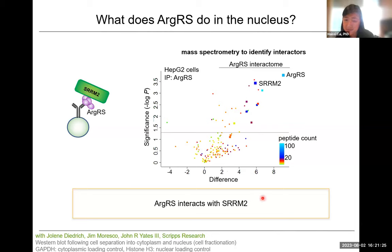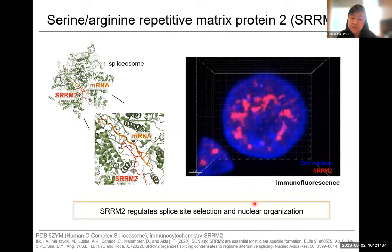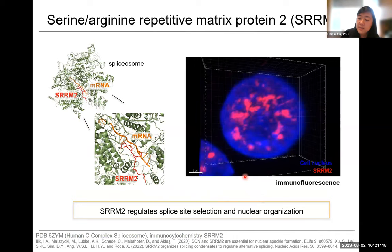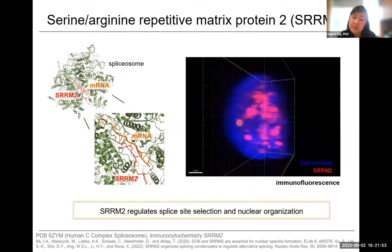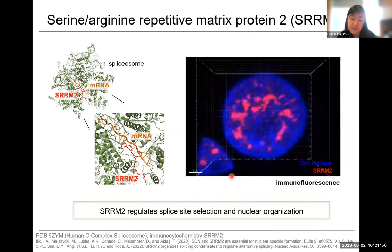That's quite interesting because SRRM2 is a nuclear protein, fulfilling the requirement. SRRM2 has been previously described as both a member of the spliceosome and an organizer of nuclear condensates, specifically nuclear speckles or splicing speckles. You can see the N-terminal 1% of SRRM2 in this cryo-EM structure. The localization of SRRM2 in the cell is really quite pronounced — you can see these very defined regions — and other studies have shown it is an organizer of nuclear speckles. This seemed like a really good interaction partner for exploring the potential function of nuclear ArgRS.